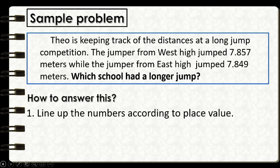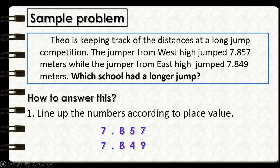First, we are going to line up the numbers according to the place value. So we will write 7 and 857 thousandths on top and 7 and 849 thousandths below. Make sure to align the decimal points so that all the digits and all the place values will also be aligned correctly.